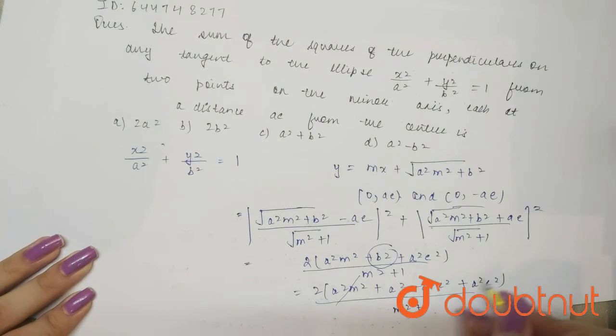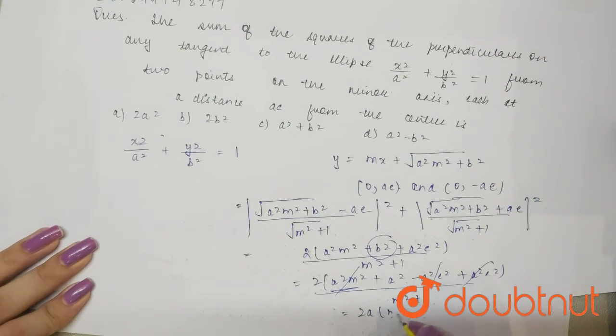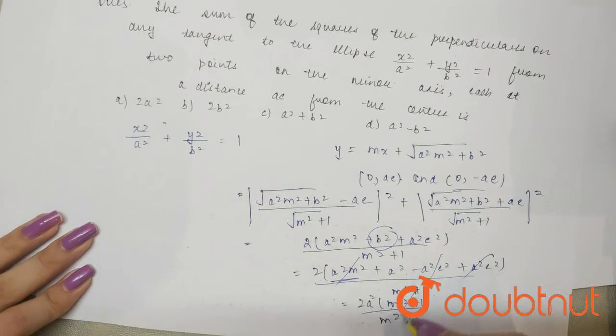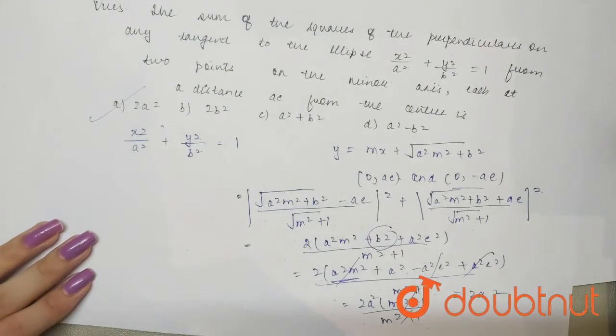So these will be cancelled, sorry this will not. So this will be twice of a square into m square plus 1 divided by m square plus 1. Now these will cancel and we will get twice of a square that means option a is correct.